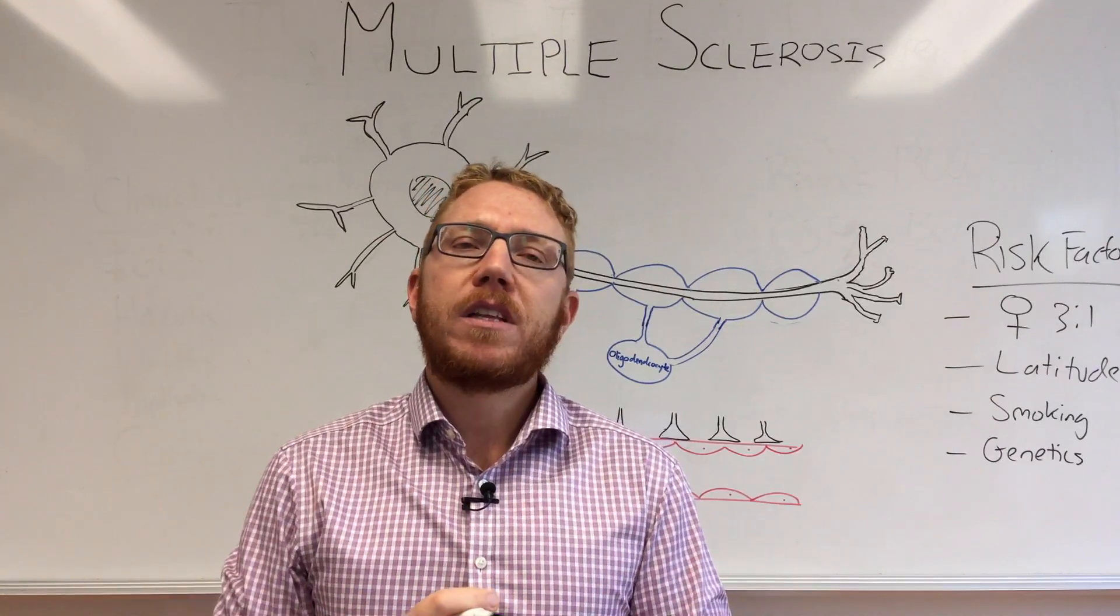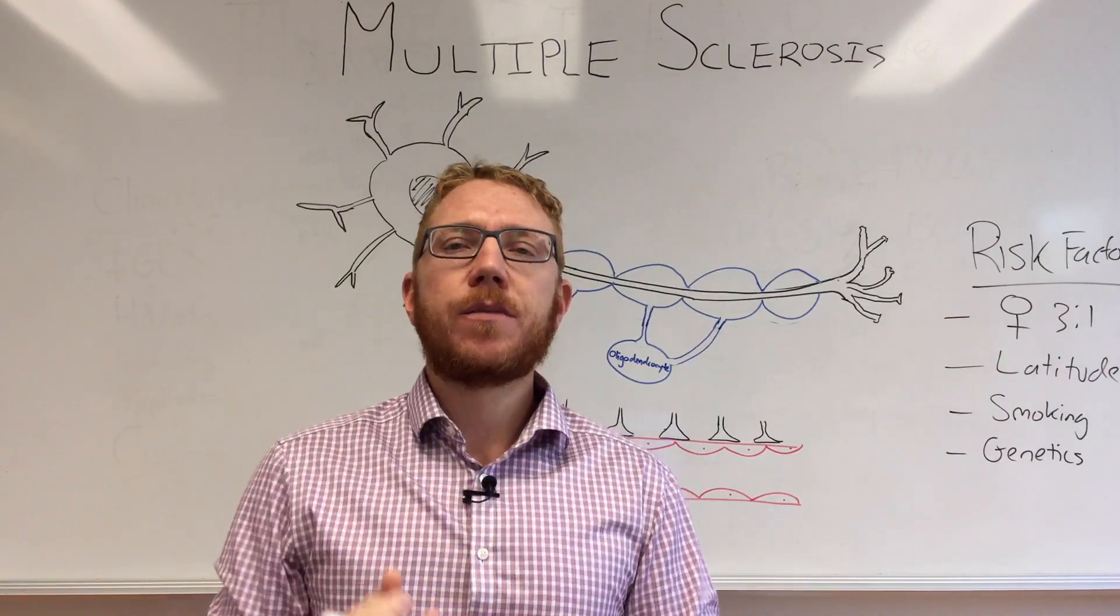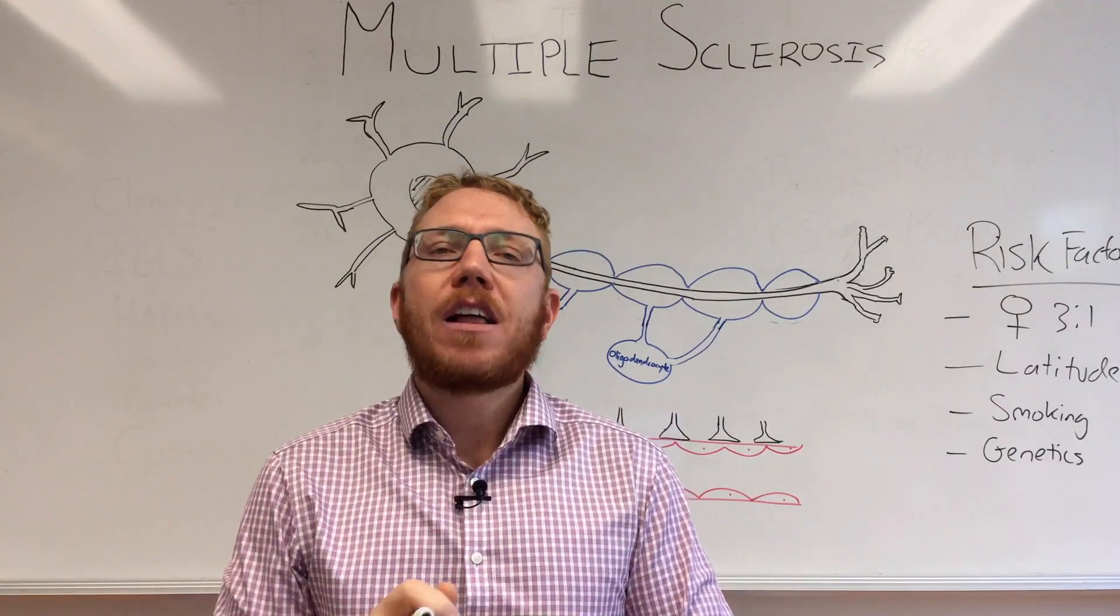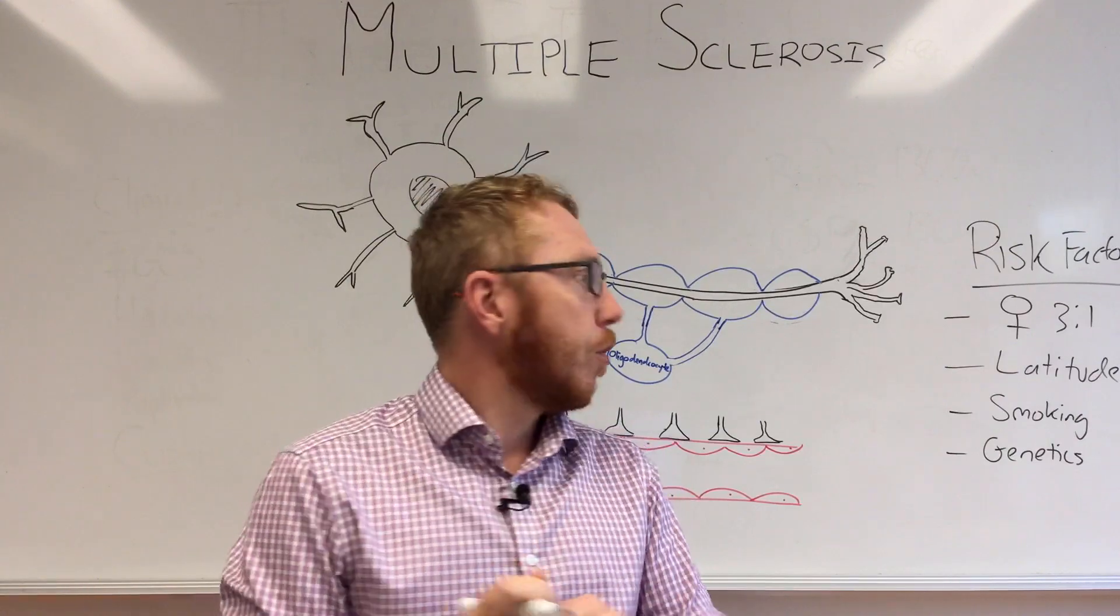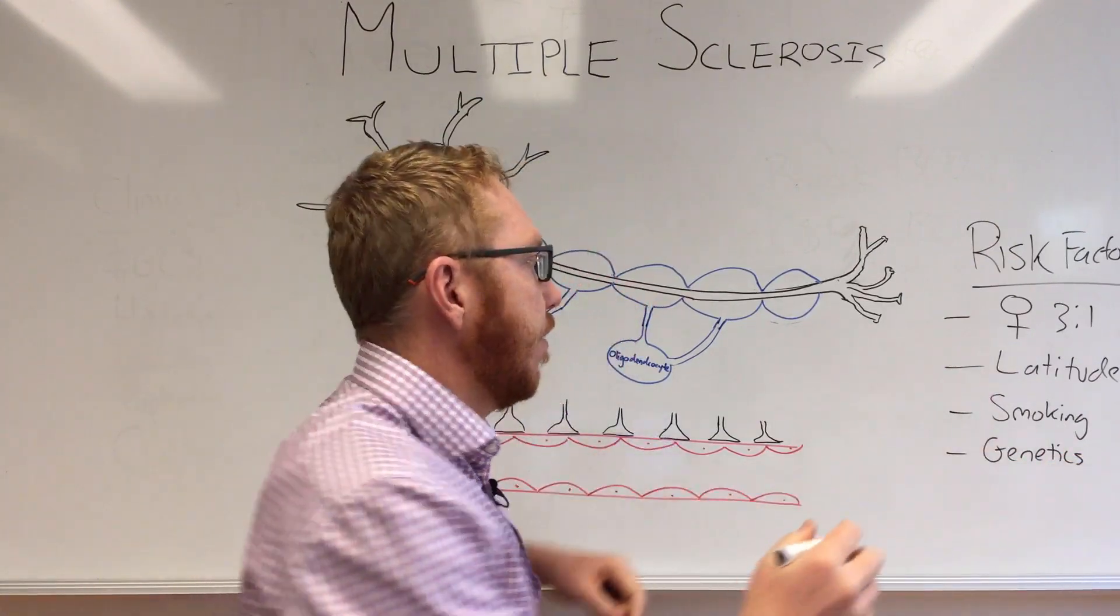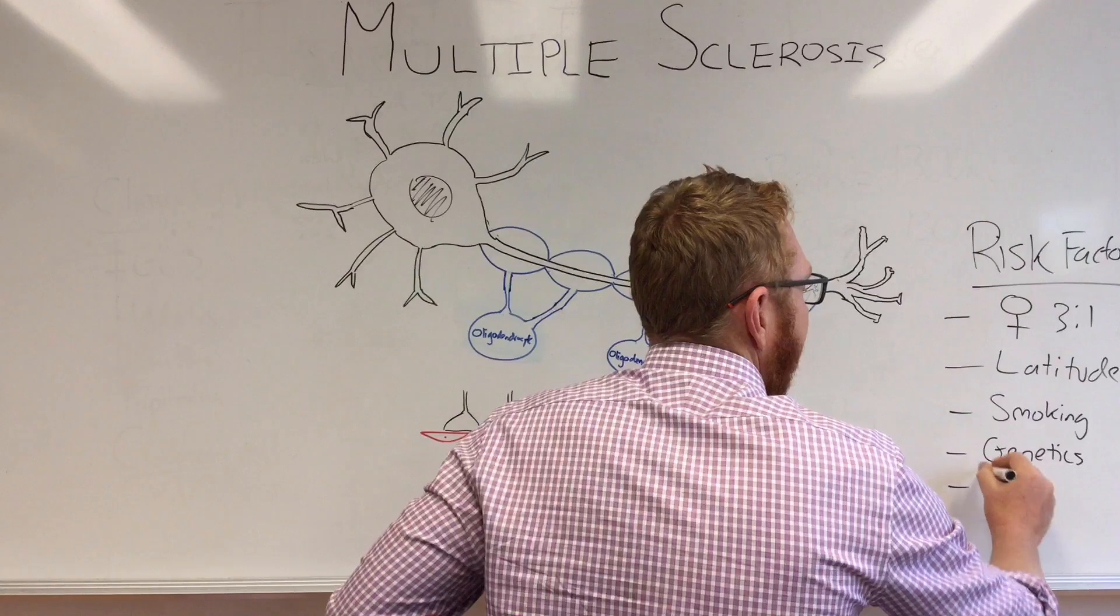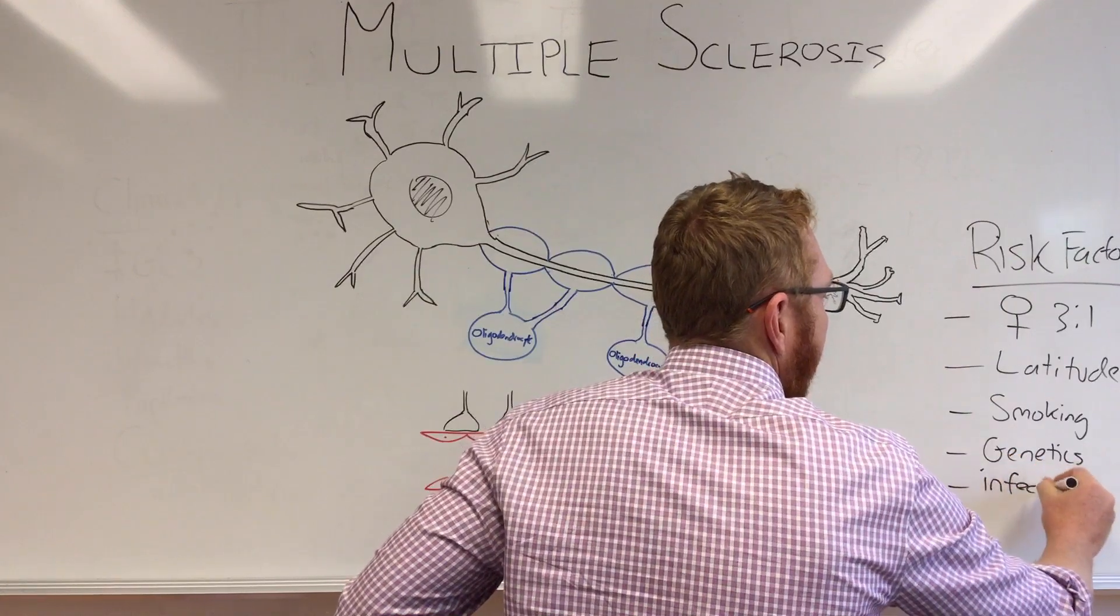Genetics - it also appears that those who have the disease in the first degree relatives like the parents, siblings, children - the likelihood is about 20 to 40 times more of a risk in that particular group. And then finally we do have infections.